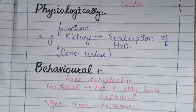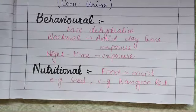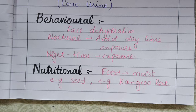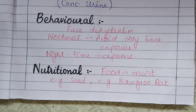Next is behavioural adaptation. In this, organisms face dehydration and must avoid it. These organisms are nocturnal — nocturnal animals are active at night and rest during the day to avoid heat exposure. For example, humans during the month of Ramadan try not to go outside too much because fasting causes dehydration, so they adopt behavioural adaptation to prevent dehydration.